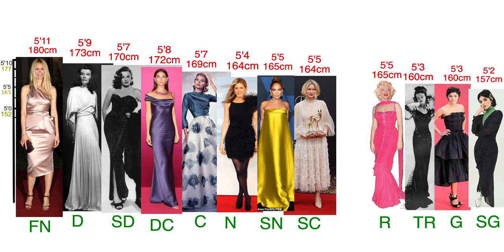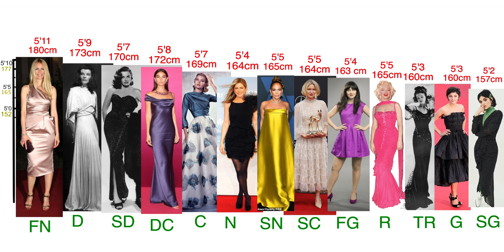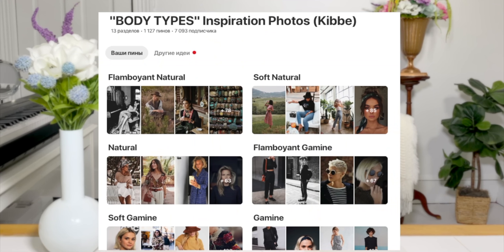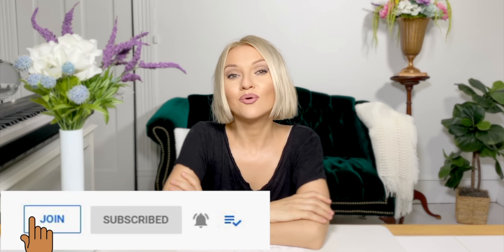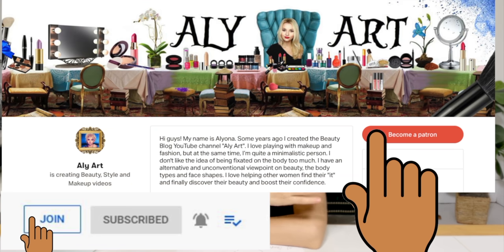Gamine: five feet five inches and under — just one of those smaller people. Soft Gamine: under five feet five inches, usually very petite — they can be very small. Flamboyant Gamine: five feet six inches and under — he gives Flamboyant Gamines a bit more height. That's it! Thank you so much for watching. Subscribe to my Pinterest for 13 boards as inspiration for body types, and my Instagram — links are down below. You can also become a sponsor or subscribe on my Patreon for exclusive videos and early access. Thank you so much, and I'll see you very soon!